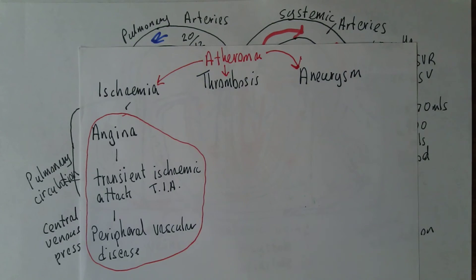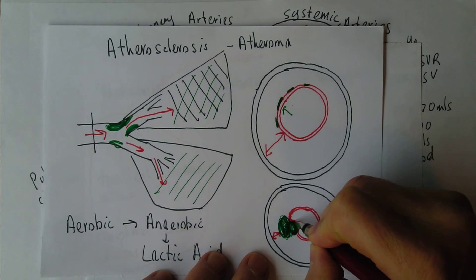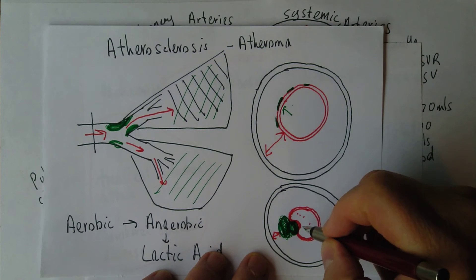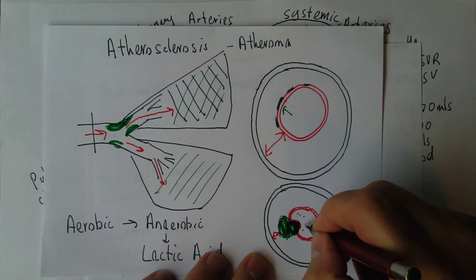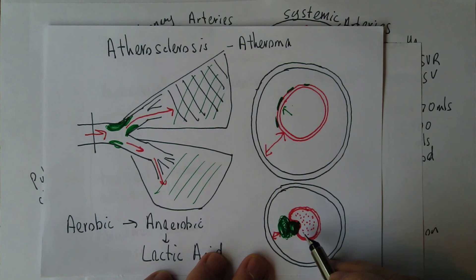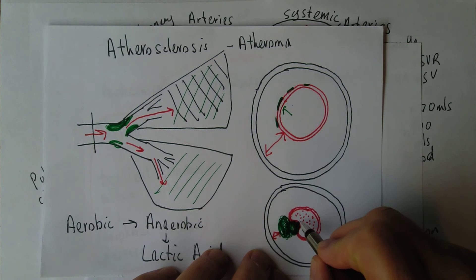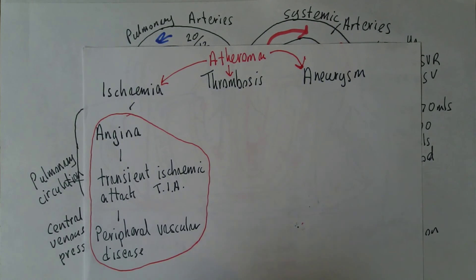Going back to this diagram, what can happen is if there's supposed to be a roof on this atheromatous plaque here, if that's damaged, the blood can come into contact with the core of the plaque. The core of the plaque is atherogenic and will promote coagulation. If the plaque ruptures and the blood comes into contact with the core of the atheromatous plaque, a blood clot can start to develop. The blood clot where there's not supposed to be one is called a thrombus.